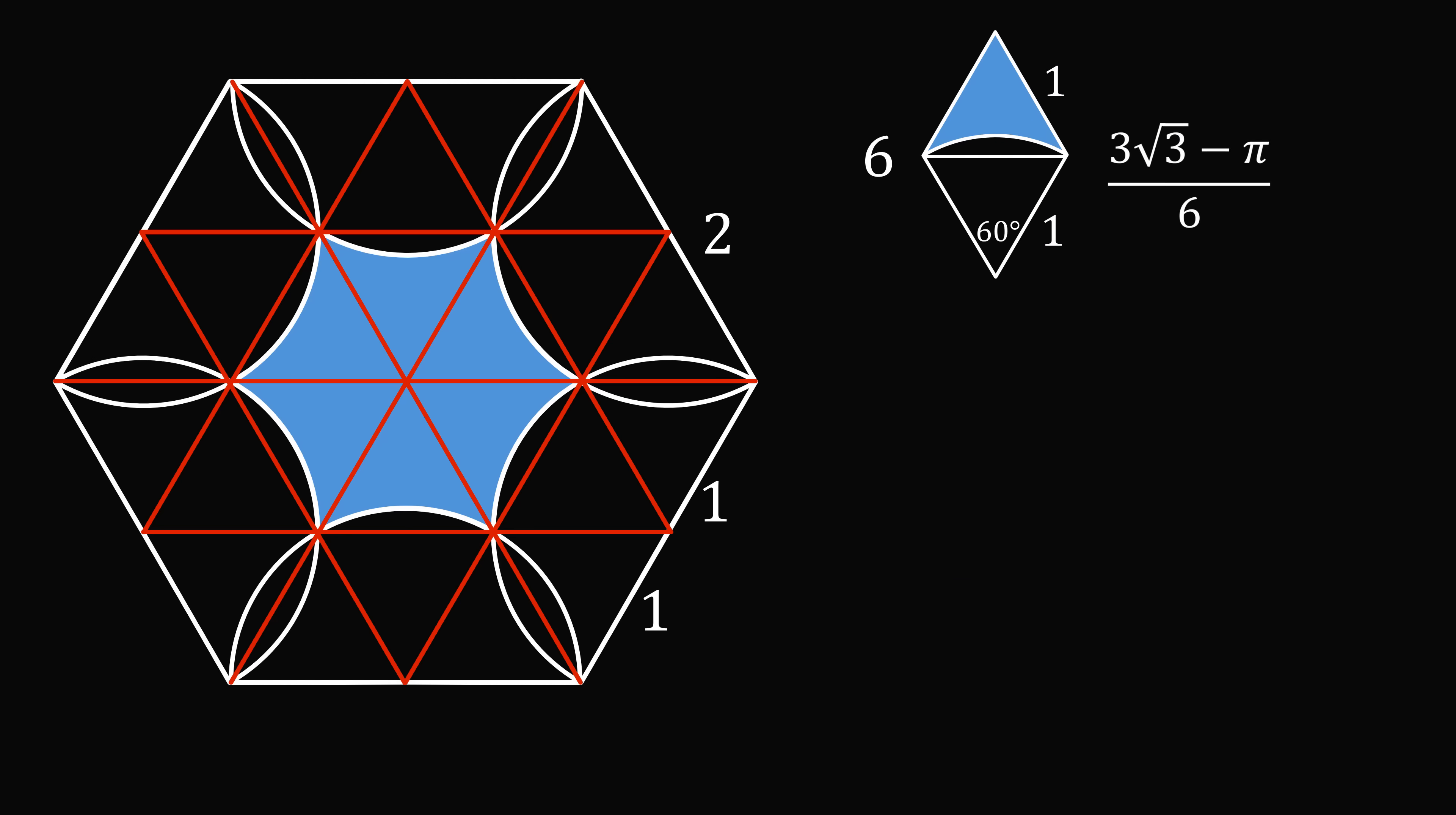Now, the area we want is exactly 6 times this area, and this simplifies to be 3 root 3 minus pi, which is approximately 2.05. And that's the answer!